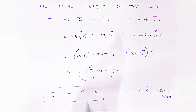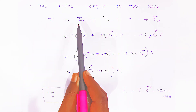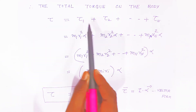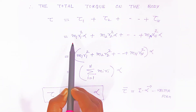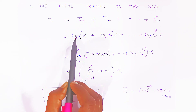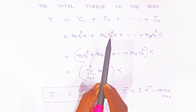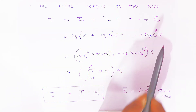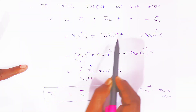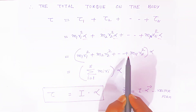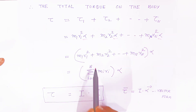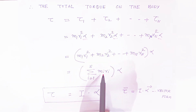The total torque acting on the body is found by adding the torques on each and every particle — the first, second, and nth number of particles. Substituting the values: total torque equals m1 r1 squared alpha plus m2 r2 squared alpha plus ... plus mn rn squared alpha. Taking alpha common, we get: alpha into (m1 r1 squared plus m2 r2 squared plus ... plus mn rn squared). This is nothing but the summation of mi ri squared, from i equals 1 to n, multiplied by alpha.